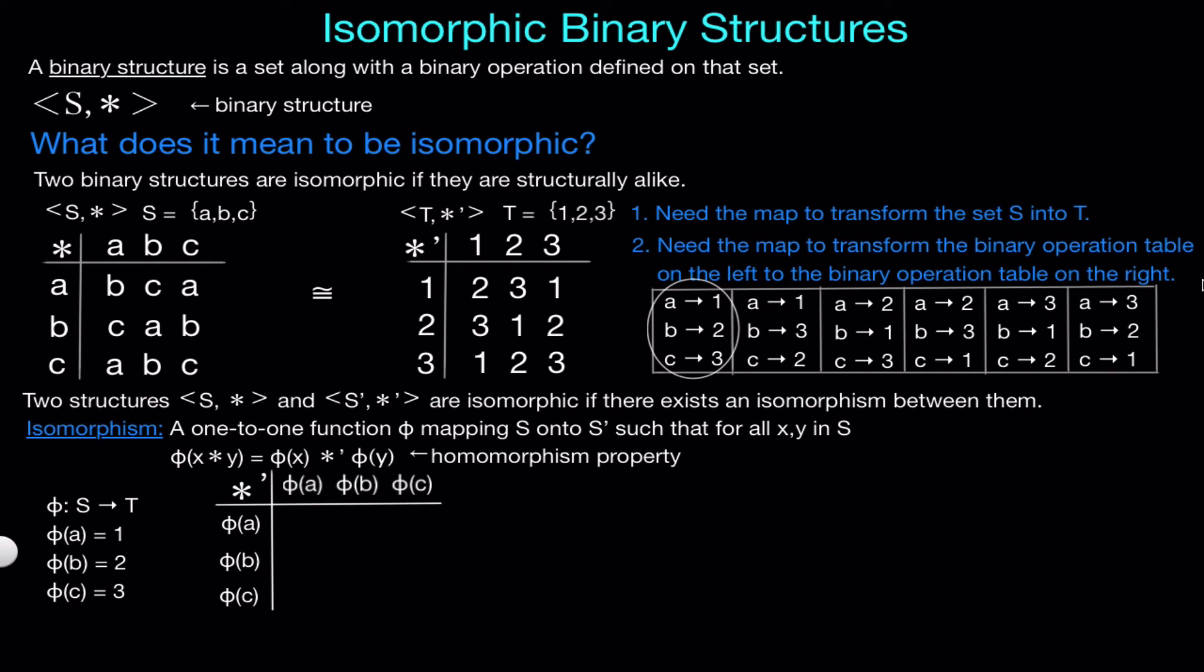Now we suspect that this is our isomorphism, but we still haven't verified that it is a homomorphism. In order for it to be a homomorphism, we need the homomorphism property to be satisfied for every combination of elements. So let's look at one spot. We'll look at the spot in the first row, second column. On the left table we have A star B equals C. Now since our function sends A to 1 and B to 2, we must look at the right table and whatever 1 star prime 2 outputs must be equivalent to C. Since we know that 1 star prime 2 equals 3, that tells us that C must be equivalent to 3 or we must have phi of C equaling 3. And it does so we have shown that phi of A star B, which we can rewrite as phi of C, equals phi of A star prime phi of B.